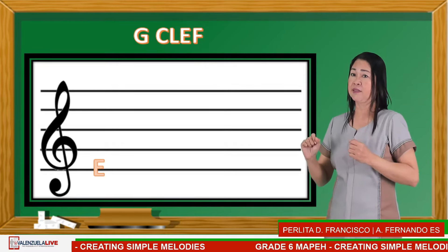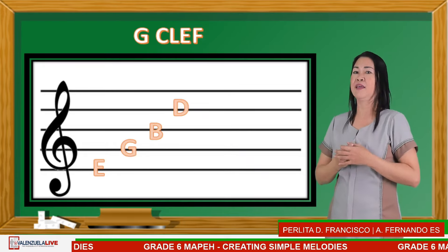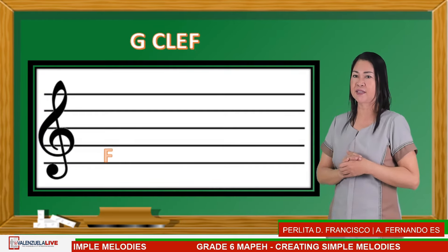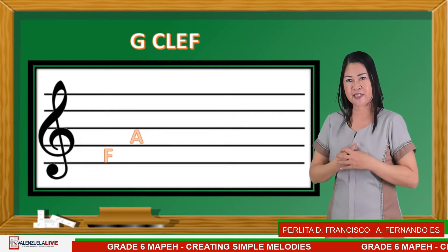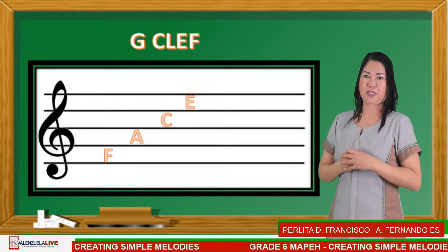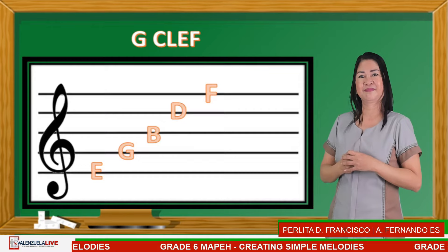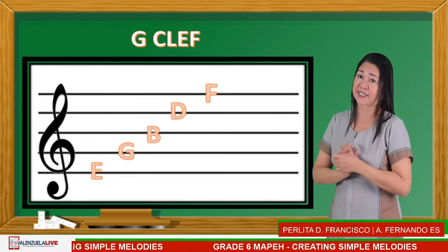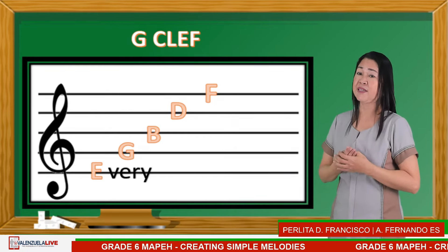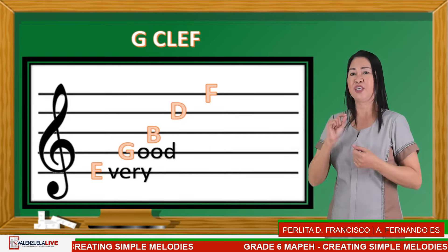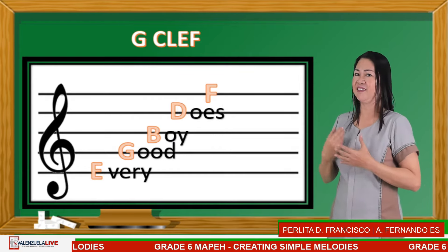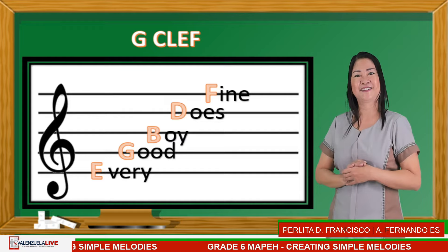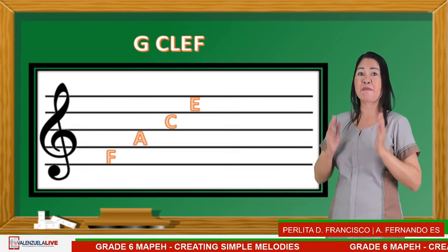For the spaces: first space — F, second space — A, third space — C, and fourth space — E. To easily remember these pitch names, we use chants or words. For the lines: Every Good Boy Does Fine. For the spaces: just remember the word FACE.